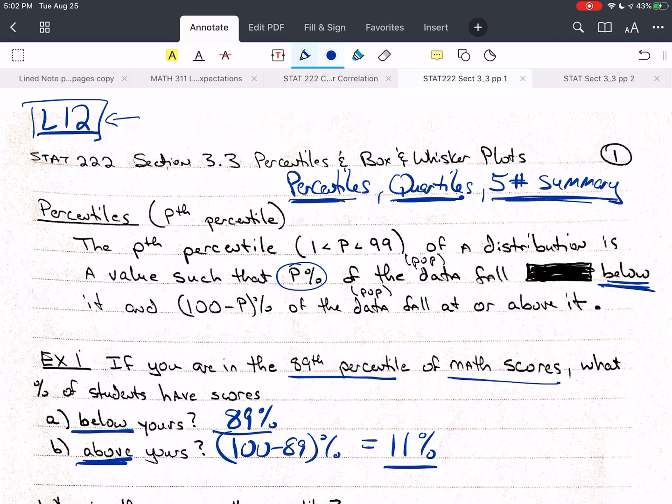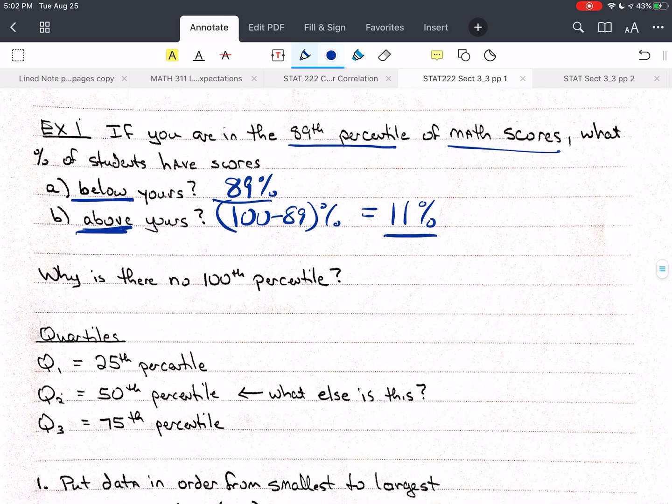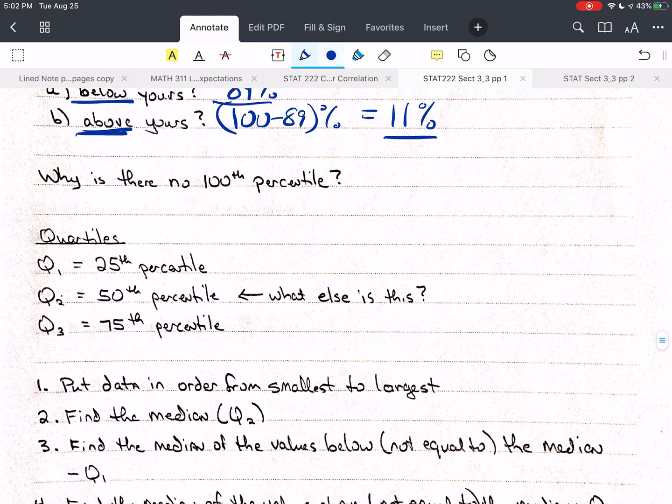That's going to be 100 minus 89% equals 11%. So I hope you can remember that. Definitely write that down in your notes. Why is there no 100th percentile? Why is there no 0th percentile?